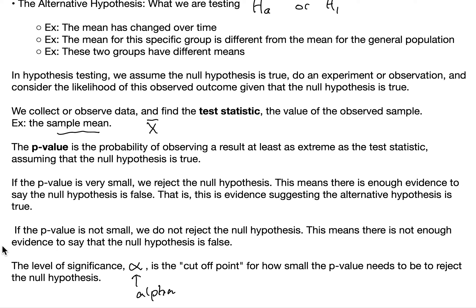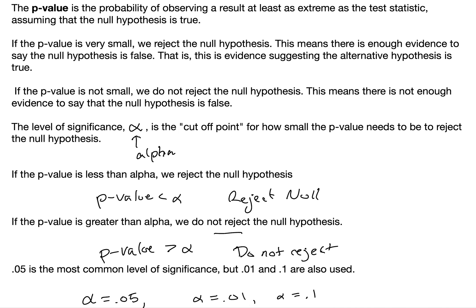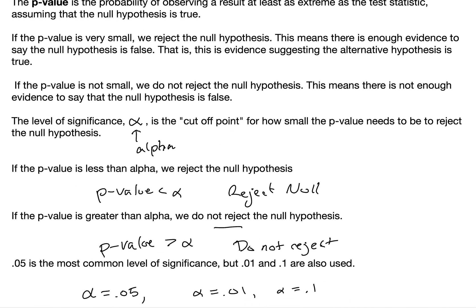So how do we define small? That is defined as the level of significance for the test, alpha — a Greek letter. Alpha is the cutoff point for how small the p-value needs to be to reject the null hypothesis. If the p-value is less than alpha, we reject the null hypothesis. If the p-value is greater than alpha, we do not reject the null hypothesis. 0.05 is the most common level of significance, but alpha equals 0.01 and alpha equals 0.1 are also used.